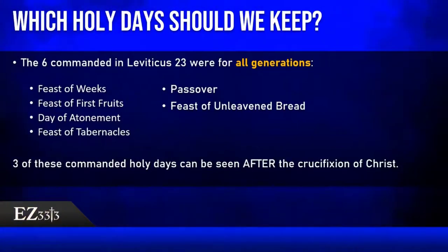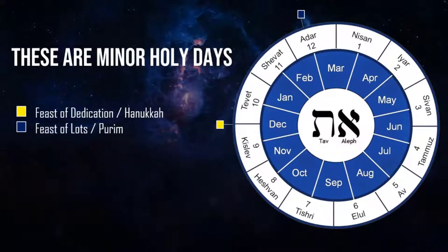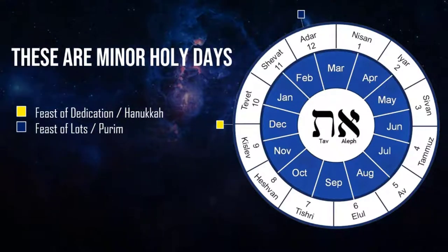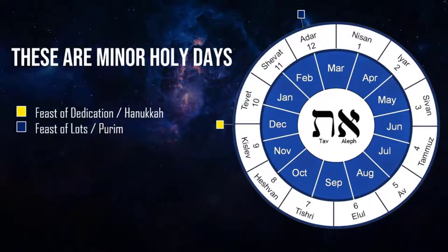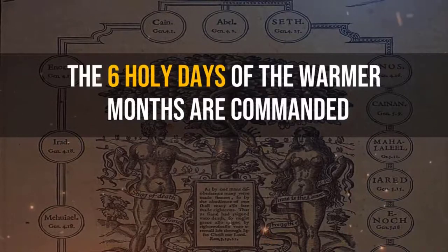Out of the seven holy days given by God, there were two called minor holy days — ones the Israelites or Jews had come up with themselves. Those two holy days are Purim and Hanukkah, the Feast of Dedication. The minor holy days fall in the cooler parts of the year: right around Kislev we have the Feast of Dedication, and in the month of Adar we have Purim. These weren't commanded by God; they were created by men. You find Purim in the book of Esther and Hanukkah in the book of Maccabees. The seven God-given holy days all fall in the warmer half of the year.